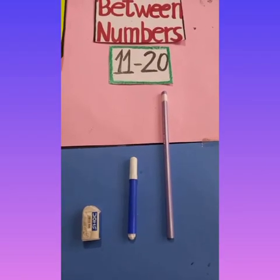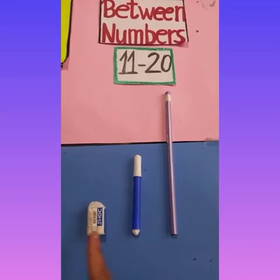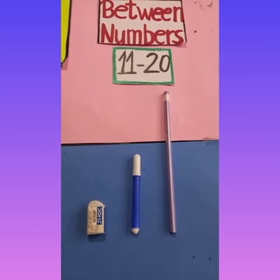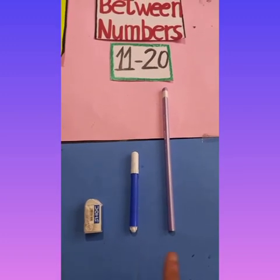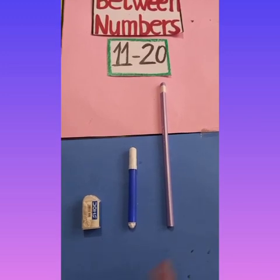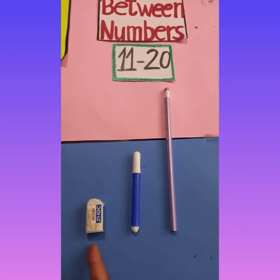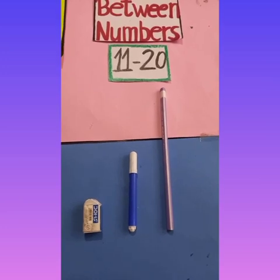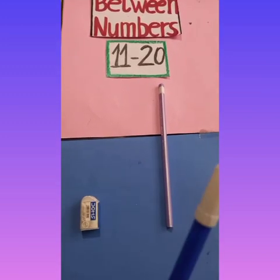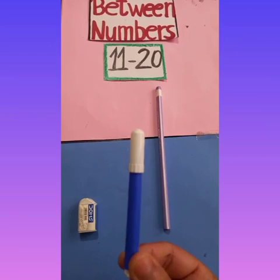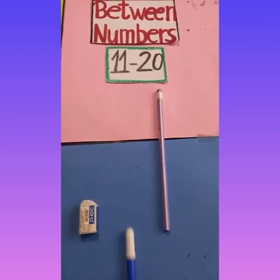So children, can you tell me how many things I placed here? Yes, there are three things: an eraser, a sketch color, and a pencil. Can you tell me what is in between the eraser and the pencil? What is in between eraser and pencil? Think in your mind. Very good — a sketch pen. Sketch pen is in between the eraser and the pencil.